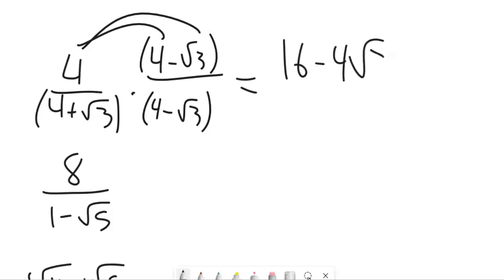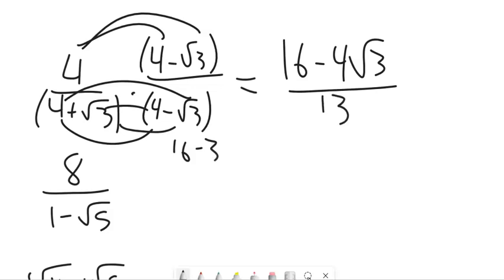But I pick this number strategically so that, watch what happens. And as that gets distributed into there, 16 minus 4 root 3 over, let's see, 4 times 4 is 16. 4 root 3, negative 4 root 3 drops out. And then root 3 times negative root 3 is minus 3. So that's a 13. There it is.